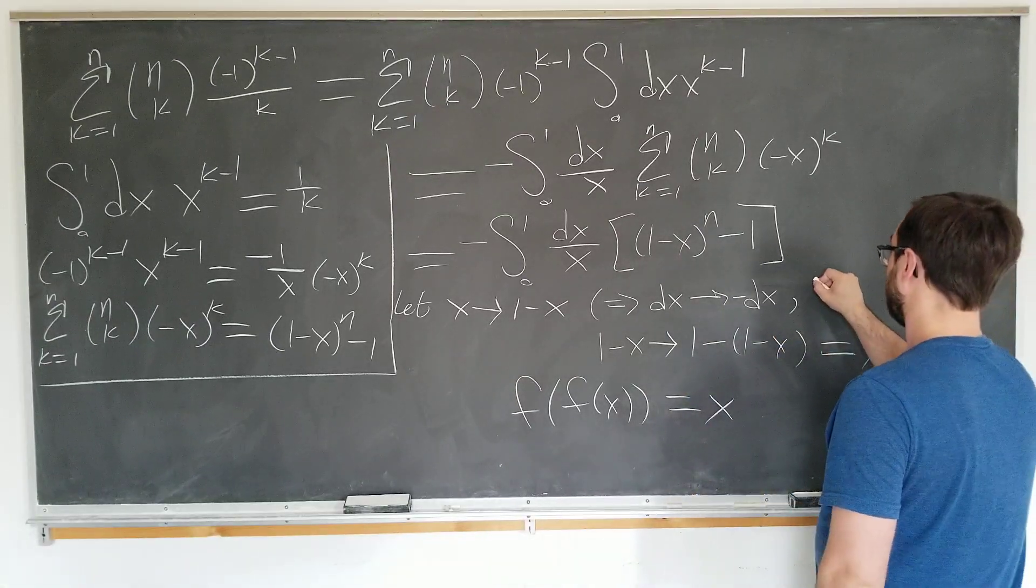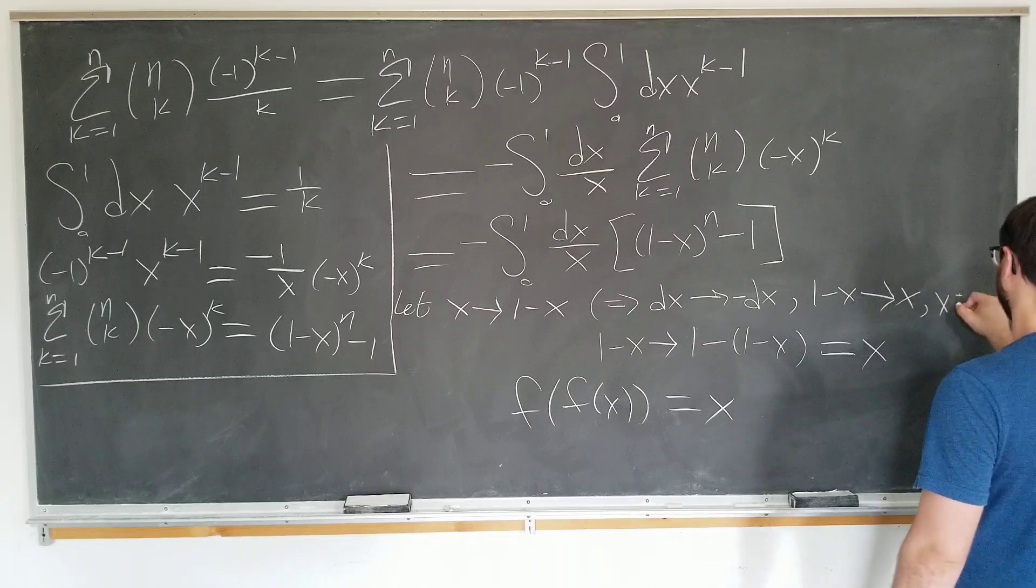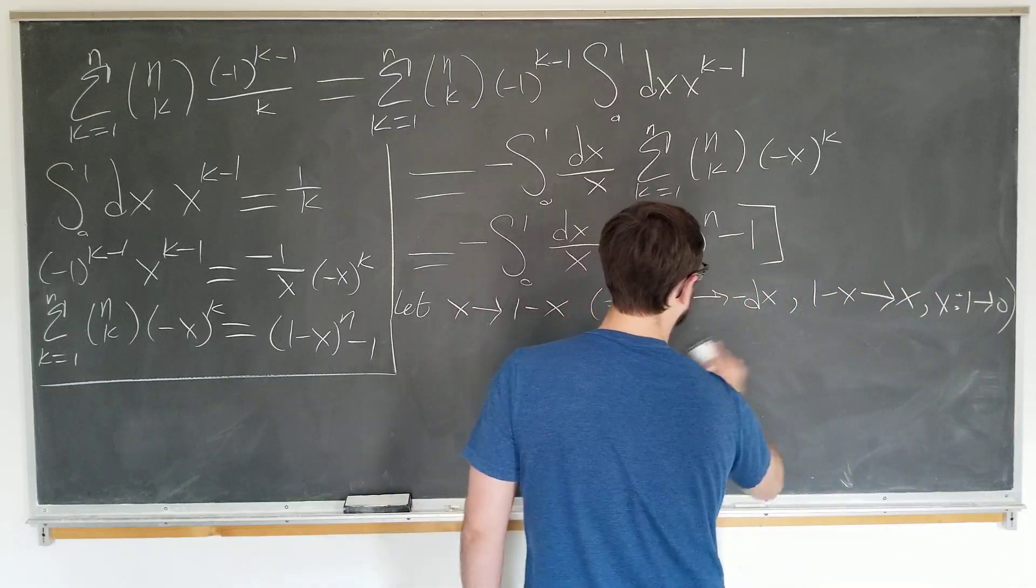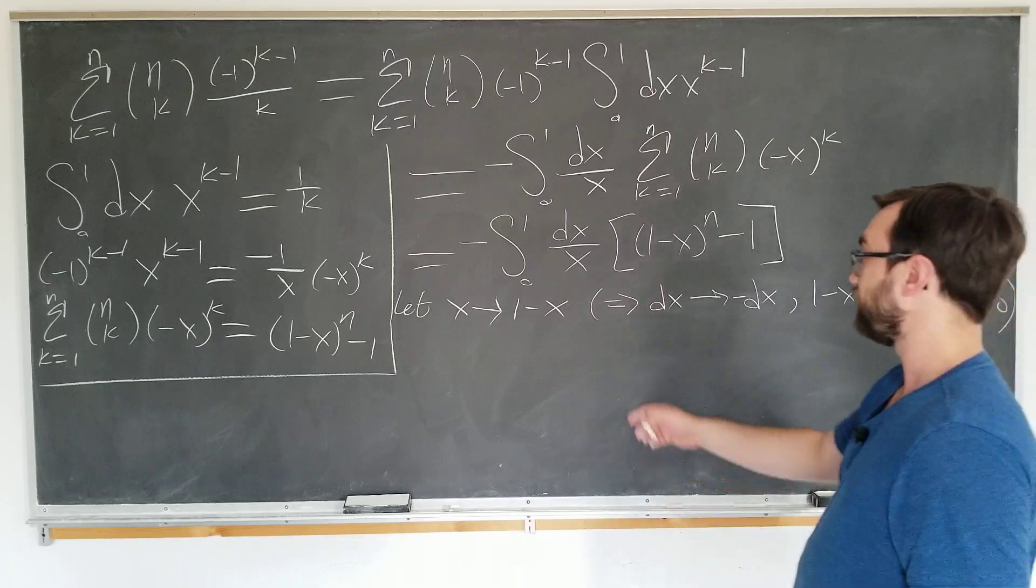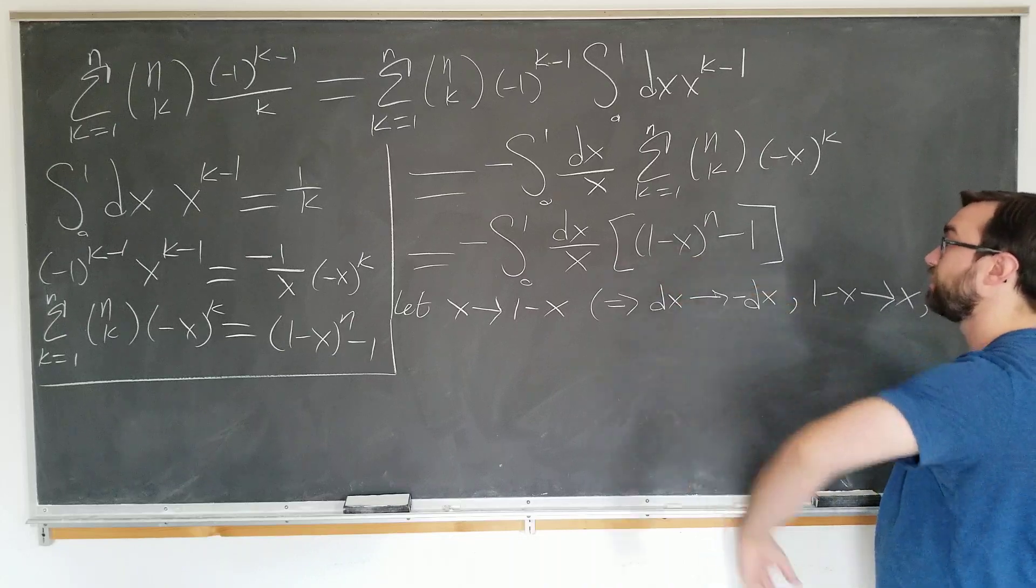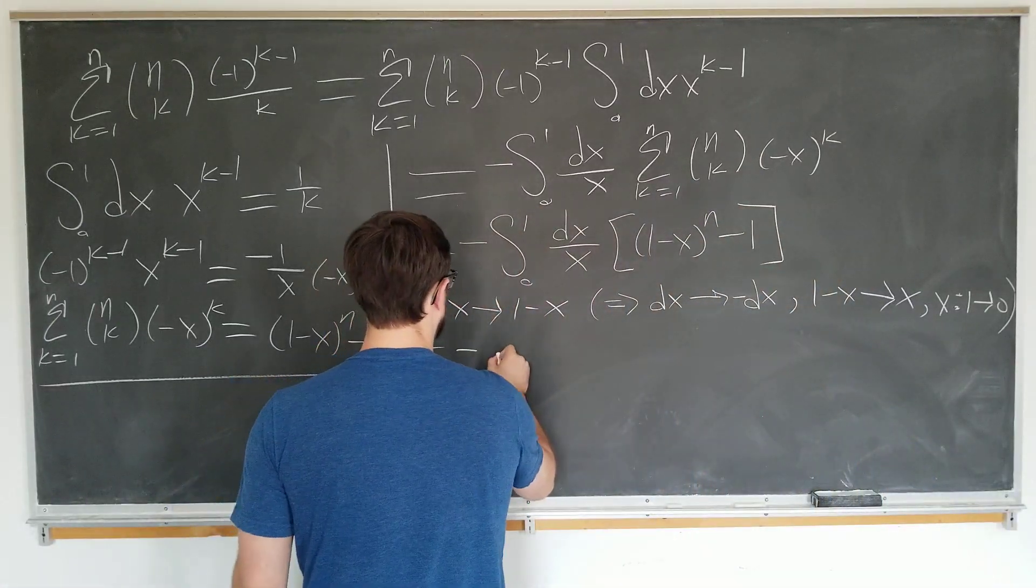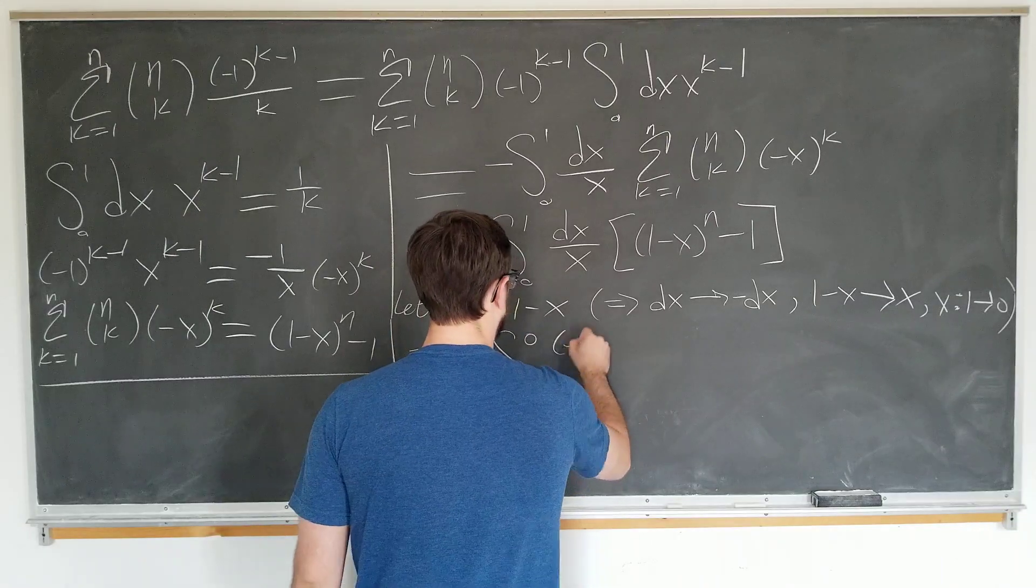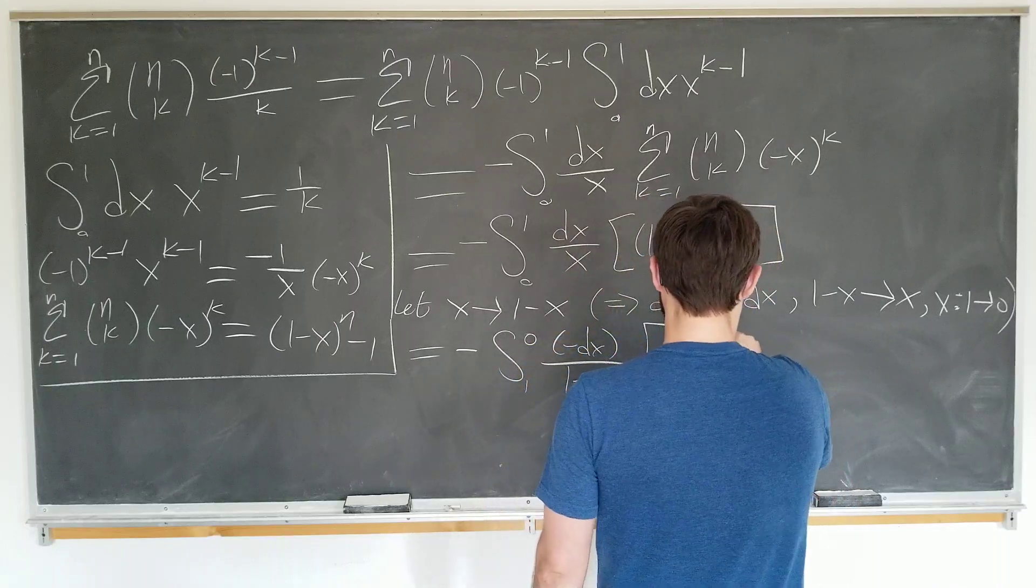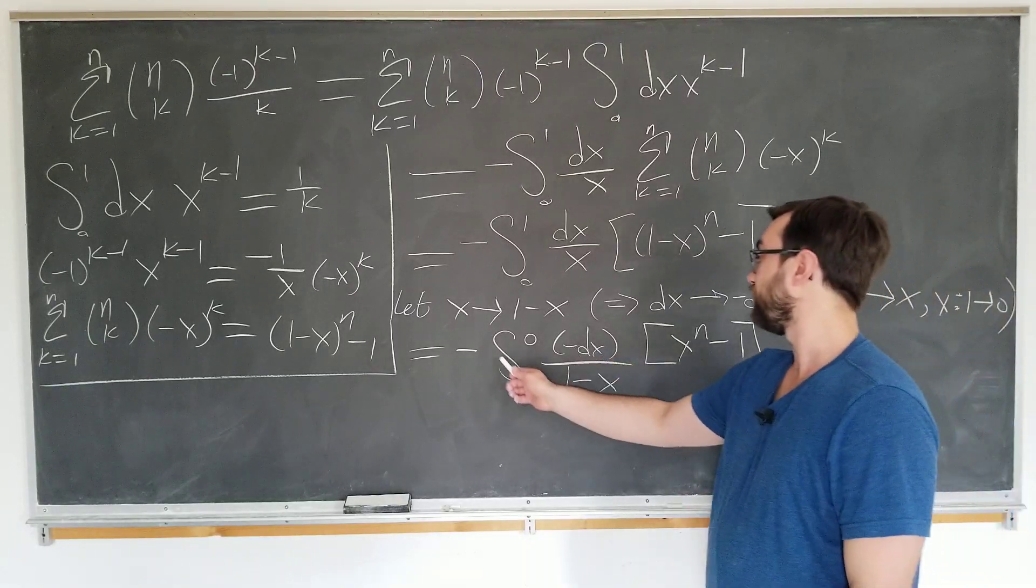Excellent. Now we can transform our integral. We're just going to replace all instances of x by one minus x, all instances of one minus x by x, we're going to put the minus sign for the dx and we're going to interchange the limits of the integral. Minus integral from one to zero now, minus dx over one minus x, now we have x to the n minus one. We are going to now note that these two minus signs cancel and we want our integrals to go from zero to one so we're going to introduce another minus sign outside.